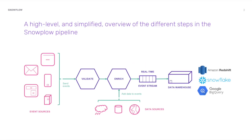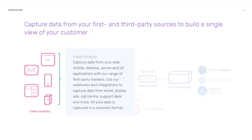This is a conceptual diagram of the Snowplow pipeline. We'll start on the left side with our event sources. We have a range of first-party trackers: a JavaScript tracker, iOS and Android SDKs, and a plethora of server-side trackers. We also give you the ability to ingest data from any application that offers an API or webhook.